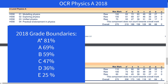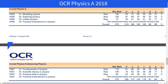In 2018, the OCR Physics A grade boundaries were the following: an A star required 220 out of 270, equating to 81%. A was 69%, B was 59%, C was 47%, D was 36%, and E was 25%. An excellent revision tactic would be to take all of the 2018 papers and then see what grade you would actually get.